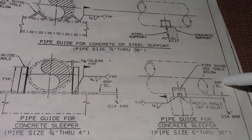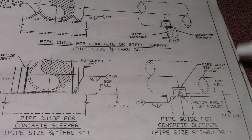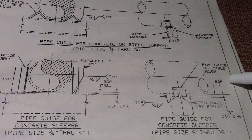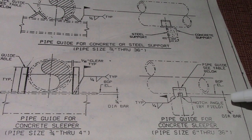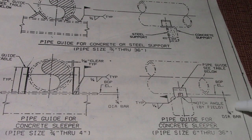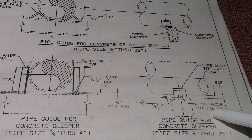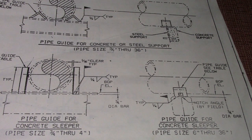BOP — bottom of pipe, and EL is elevation. Diameter of bar 3/4. That's all for now guys. Thanks for watching. Have a nice day. Bye-bye. See you next time.